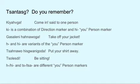Jantashk. Kiyahaga — Come in, said to one person. U, come in. Ki is a combination of the direction marker and the he-you person marker.